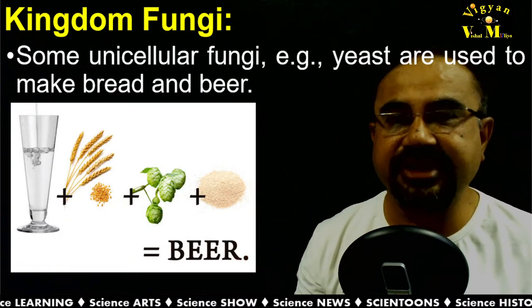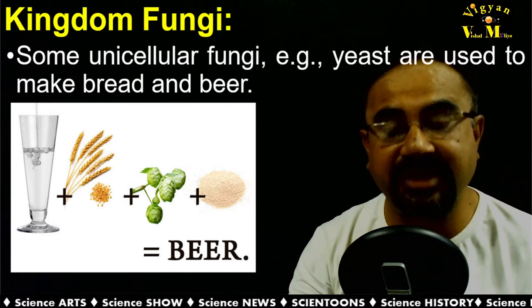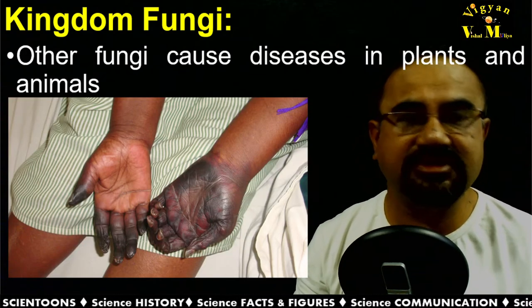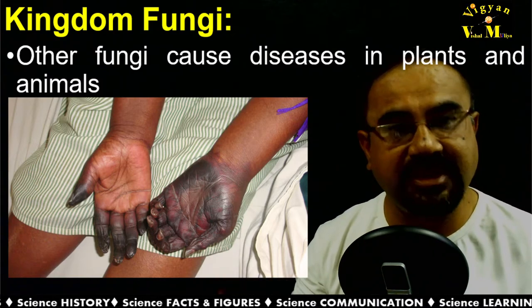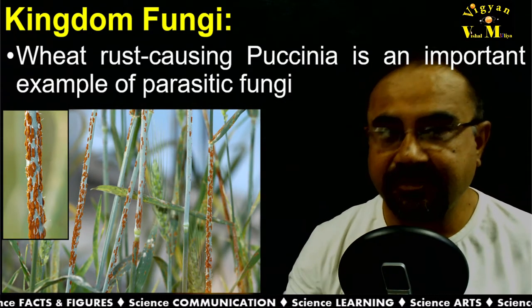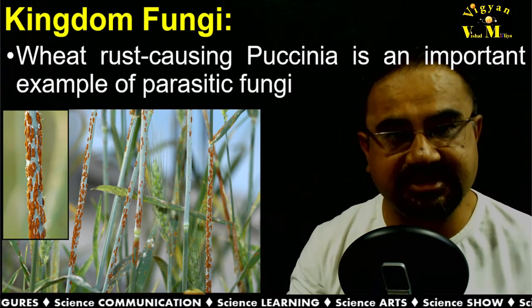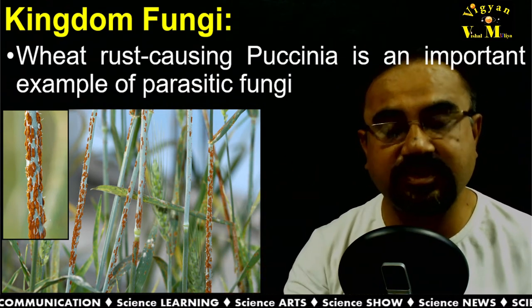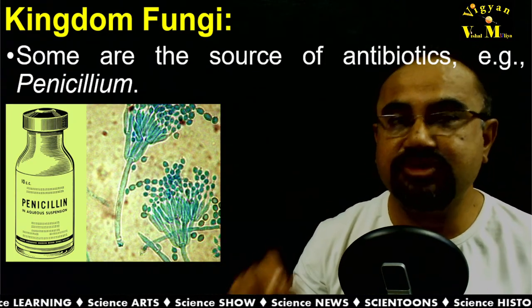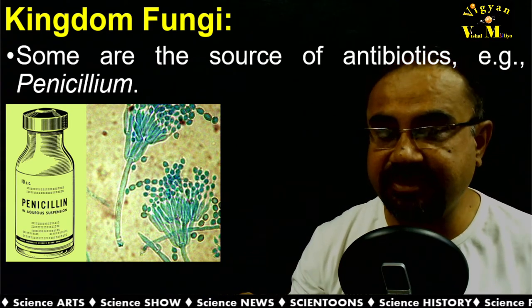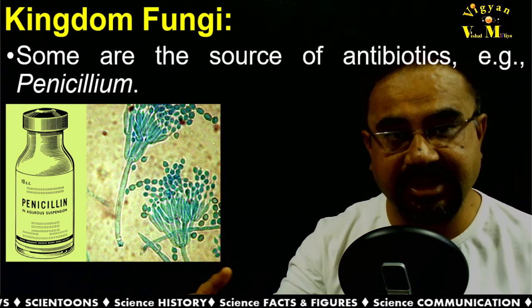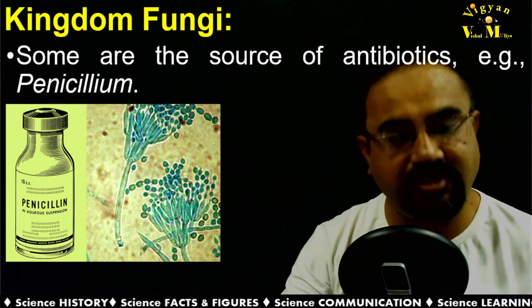Some unicellular fungi like yeast are very useful in the making of bread as well as liquors like beer. Some fungi cause diseases in plants or animals — for example, Puccinia causes wheat rust, which is a very important parasitic fungi. Many fungi are a source of antibiotics — best exemplified by penicillin, which is yielded by the fungus Penicillium.